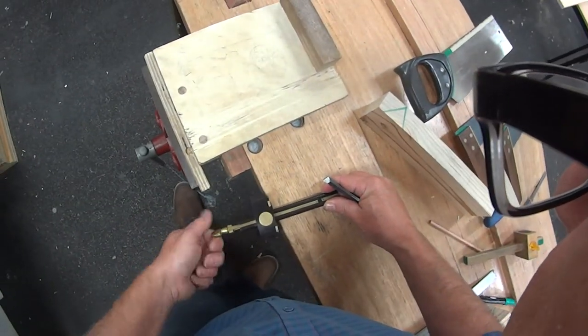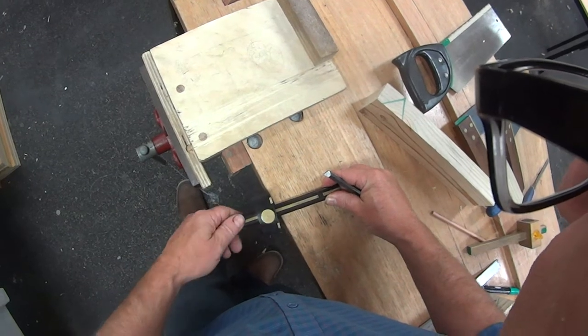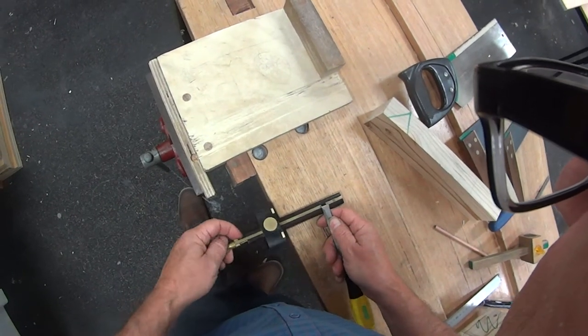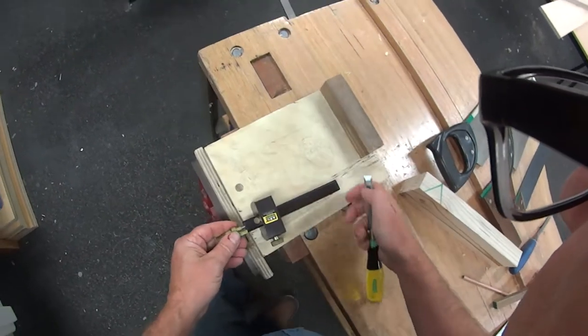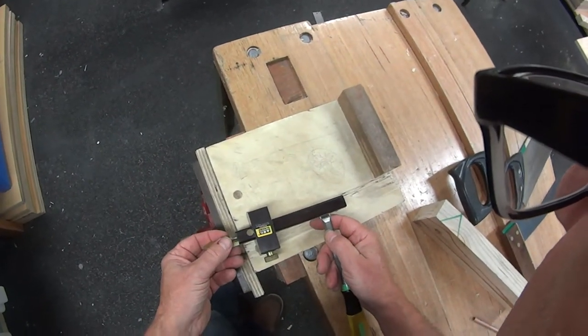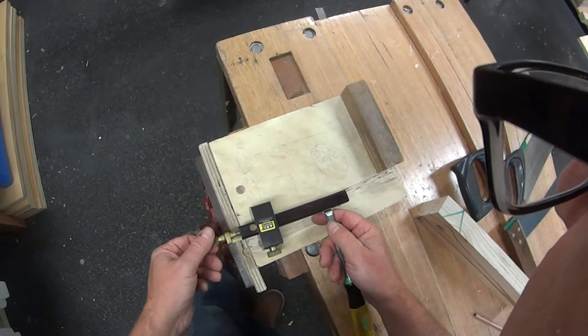Open up the points on the mortise gauge, and when you do this, make sure that you don't set the points at the blade at the bottom.